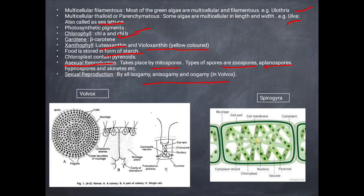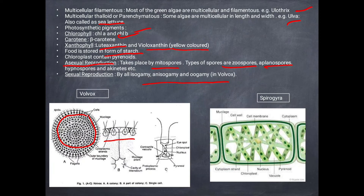In Volvox, cells are present in the form of sperm and oogonia. Male gametes are motile and female gametes are non-motile. Spirogyra has a spiral chloroplast, and the cell wall is made of pectin and cellulose.